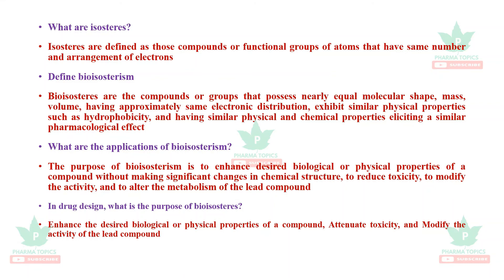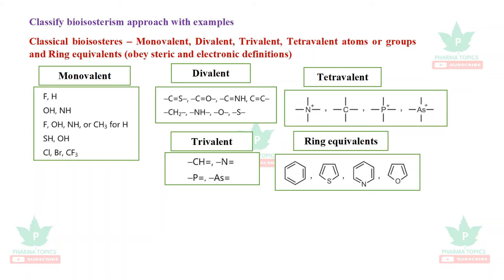Bioisosterism: an isostere means 'iso' equals same. Compounds or functional groups with the same electron arrangement are isosteres. Bioisosteres share similar molecular shape, mass, volume, electron distribution at the outermost shell, valency, and physical properties. Bioisosterism is used in analog-based drug design to increase therapeutic effectiveness, reduce adverse effects, and improve kinetic properties. Bioisosterism is classified as: monovalent, divalent, trivalent, tetravalent, and ring equivalents — these are classical bioisosteres.